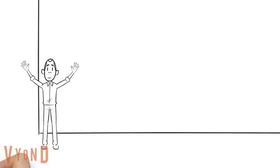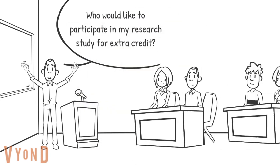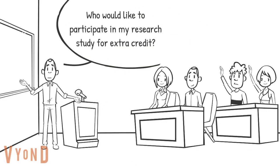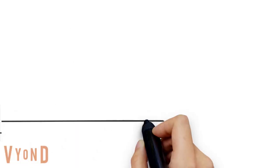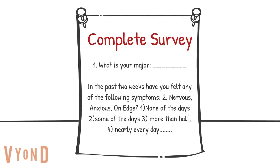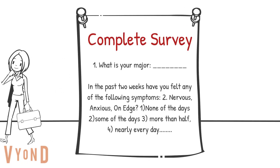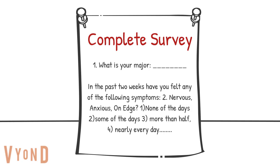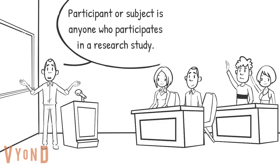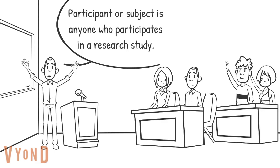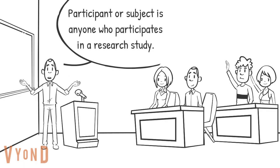Now that the IRB has approved Bill's research, he can start recruiting students from his intro to psych class by offering them extra credit. Bill's study is a survey that asks participants their major and gives them the Generalized Anxiety Disorder questionnaire — a brief questionnaire on anxiety symptoms experienced in the past two weeks. A research participant or subject (both terms are interchangeable) is an individual who participates in a research study. All subjects combined together is referred to as the study sample.